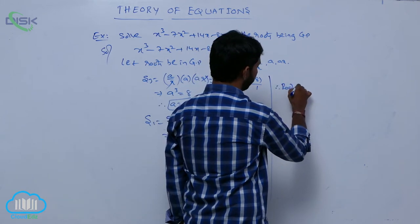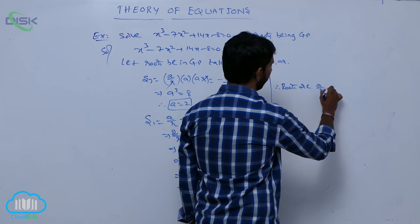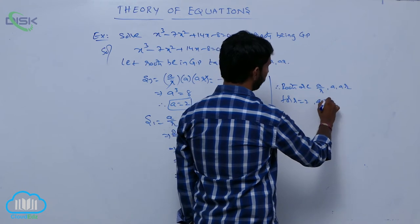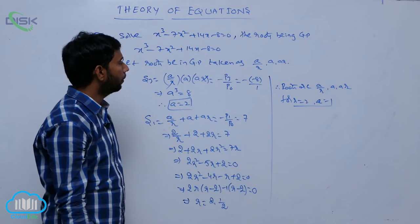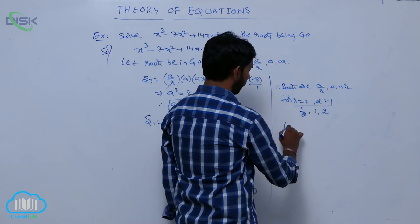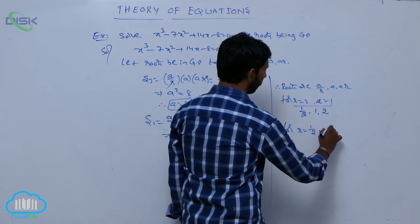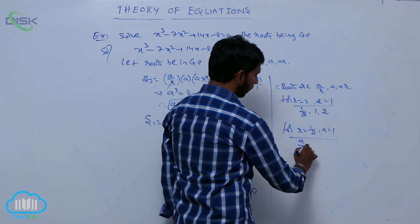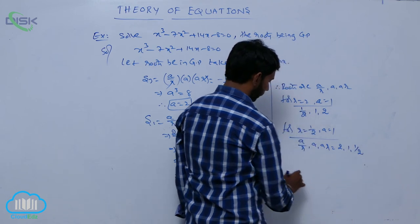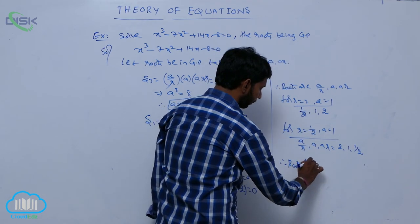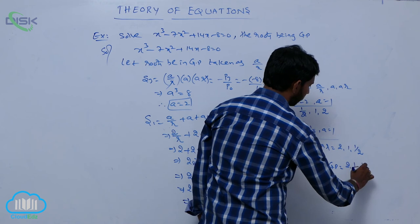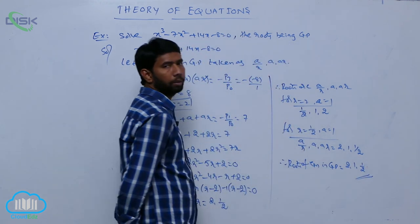Therefore the roots a/r, a, ar: for r = 2 and a = 1, the roots are 1/2, 1, 2. For r = 1/2 and a = 1, the roots are 2, 1, 1/2. Therefore the roots of the equation in GP are 1/2, 1, and 2.